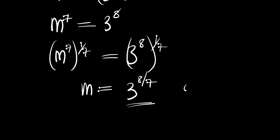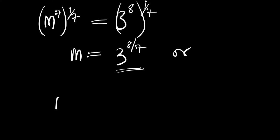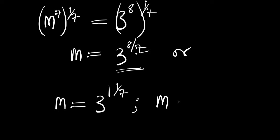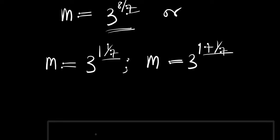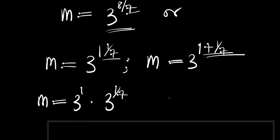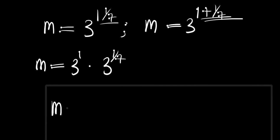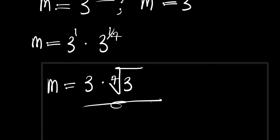We can leave our answer this way or simplify it further. Since 8 over 7 is an improper fraction, we can write it as 1 and 1 over 7, which means m equals 3 to the power of 1 plus 1 over 7. Using the laws of indices, this becomes m equals 3 to the power 1 times 3 to the power 1 over 7, which gives m equals 3 times the 7th root of 3. This is our final answer.